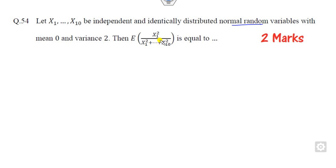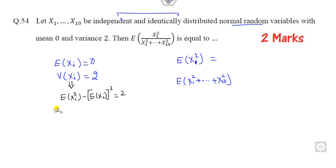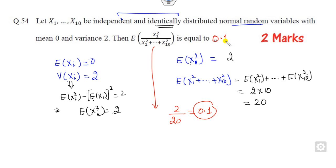For the last question, which is two marks, the variables are IID with mean of X_i equal to 0 and variance of X_i equal to 2. To find the numerator's expected value, use variance equals E(X_i²) minus (E(X_i))² = E(X_i²) − 0 = 2, so E(X_i²) = 2. The numerator is E(X₁² + ... + X₁₀²) = 10×2 = 20. The denominator is the sum of all, which is also 20, giving ratio 2/20 = 0.1. So 0.1 is the right answer.